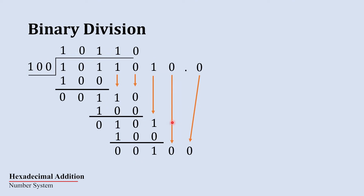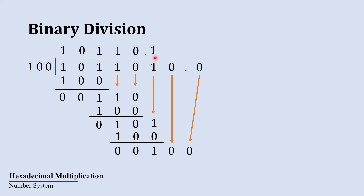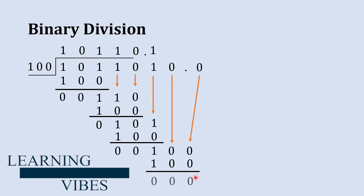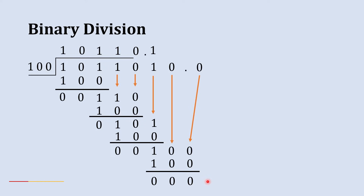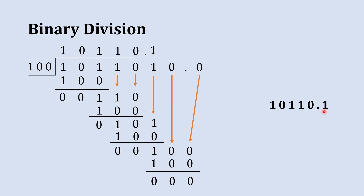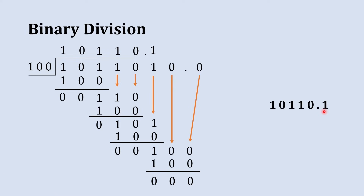Since we brought an additional zero down, place a 0 in the quotient. But before placing the next 1, since we have crossed the binary point, place a decimal point in the quotient then place 1. One 100 is 100. Subtract: 0 minus 0, 0 minus 0, 1 minus 1 — remainder is 000. The quotient is 1011000.1 with no remainder. Both forms — fractional quotient or quotient with remainder — represent the same value.